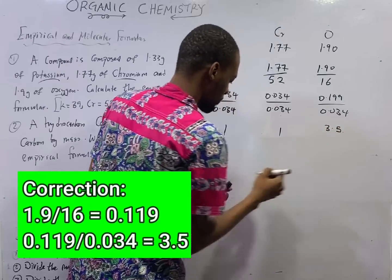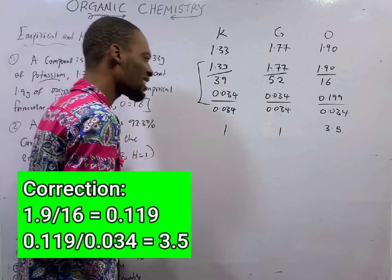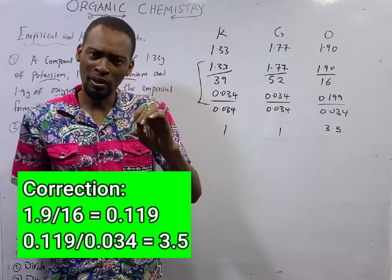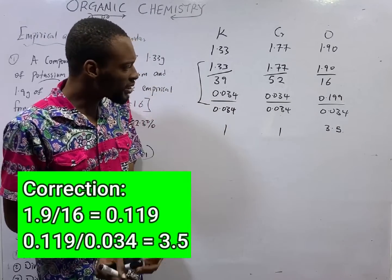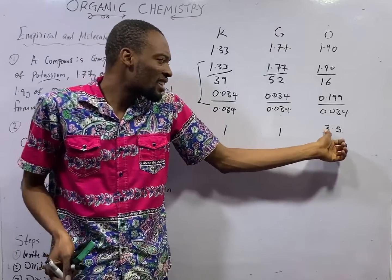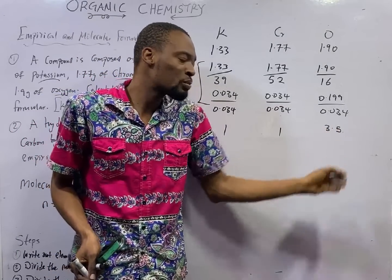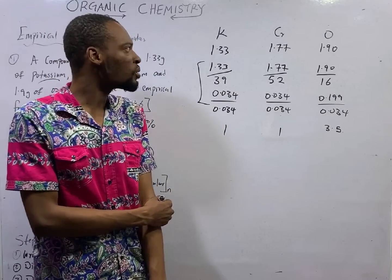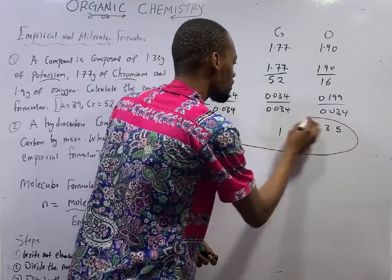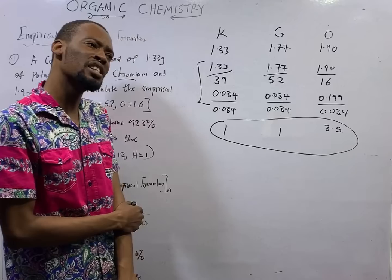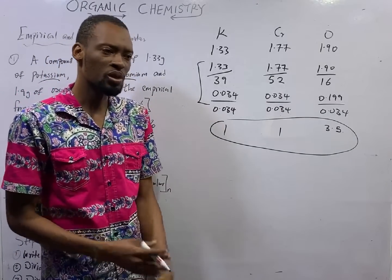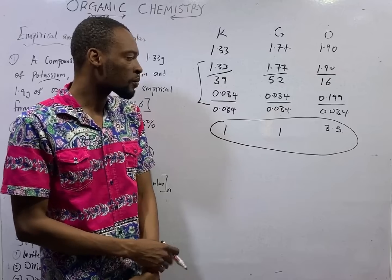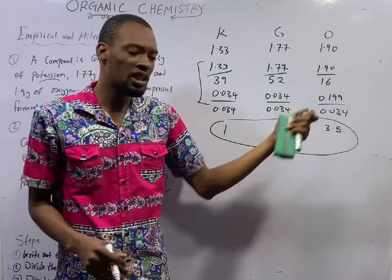For oxygen you get 3.5, and this answer is not correct for empirical formula because the ratio must be in whole numbers — no decimal point. Should we approximate 3.5 to 4 or to 3? No. You are not permitted to approximate. If your value is something close like 3.01, you can round to 3. But once it is a significant decimal like 3.5, don't approximate. Instead, multiply by a number that will give all of them whole numbers.